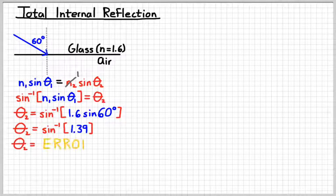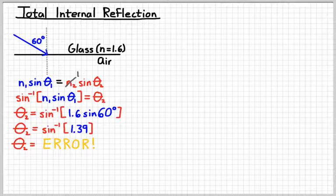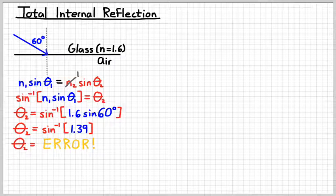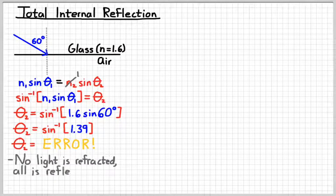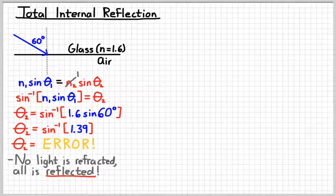And so if you were to punch into your calculator, the inverse sine of 1.39, your calculator is probably going to give you an error. If it doesn't, then it's going to give you something that's greater than 90 degrees, maybe, depending on what brand of calculator you have. More than likely, it's going to give you an error because that's not possible. It's not possible to have an angle whose sine is 1.39 because the sine of 90 degrees is 1. And so you're not going to have any light refracted. All your light's going to be reflected.